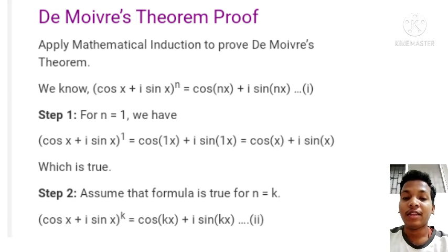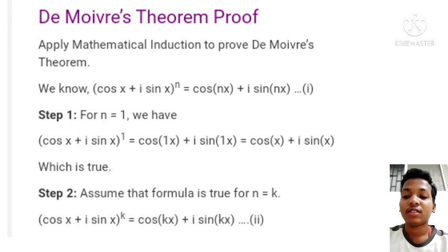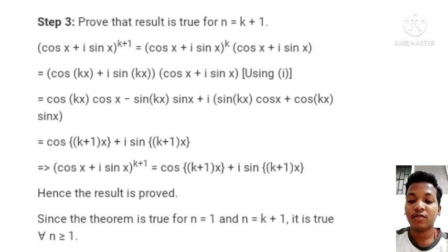Step 2: Assume that the formula is true when n equals k. Then cos x plus i sine x to the power k equals cos(kx) plus i sine(kx).